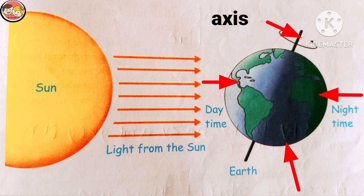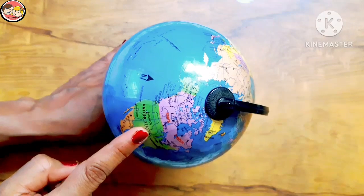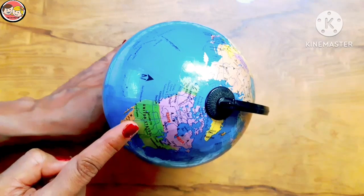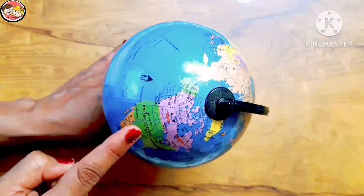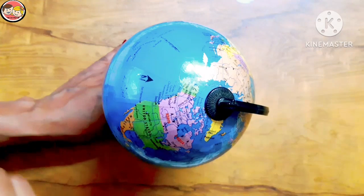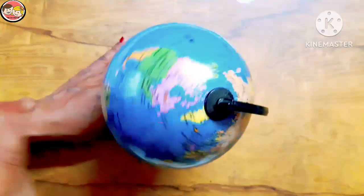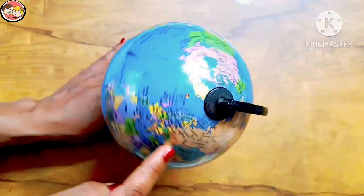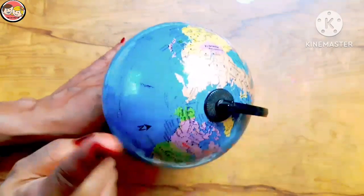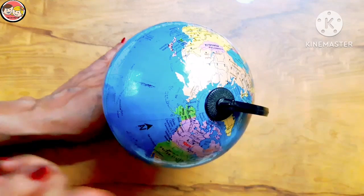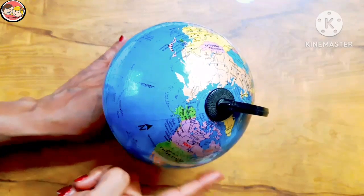Wow, that's amazing! We have learned so many interesting things about the sun, the earth, and the formation of day and night. Now children, look here — this is a globe, which represents the earth. We have learned that the earth continuously spins on its axis and takes 24 hours to spin once, so day and night occur due to the earth's rotation.